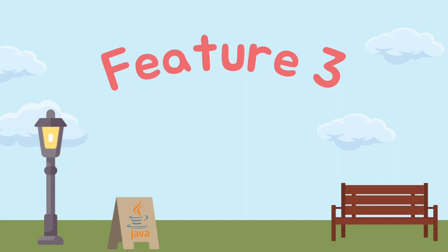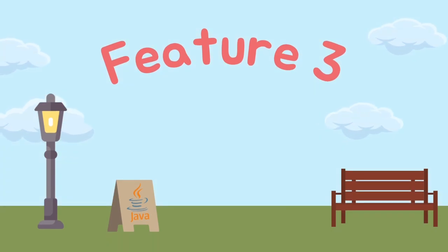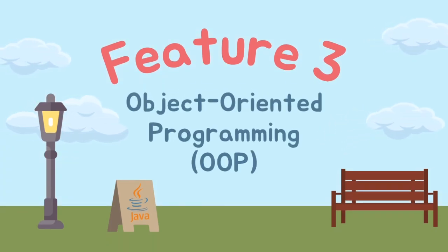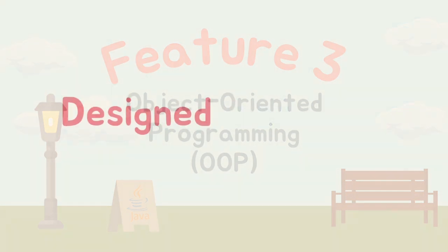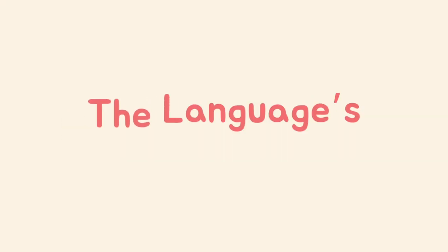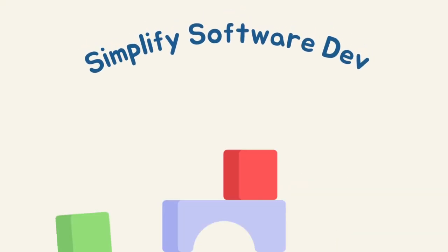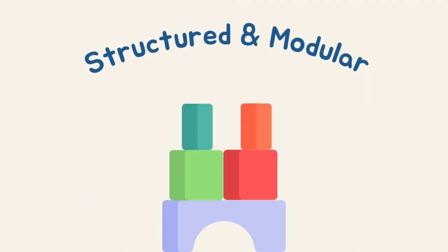Last but certainly not least, Java is renowned for its strong support of object-oriented programming principles, as it was designed from the ground up with object-oriented programming in mind. The language's creators aimed to simplify software development by advocating a structured, modular approach.